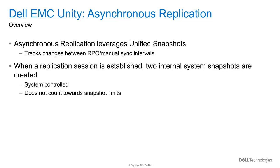Asynchronous replication leverages Dell EMC Unity's unified snapshots technology for tracking changes to the source resource between RPO intervals. When a replication session is established, two system snapshots are created on the source and destination storage resources. You will see these snapshots in Unisphere, but they are not user-modifiable and do not count toward snapshot limits. The snapshots are refreshed and updated during each RPO interval to keep the source and destination resources in sync.